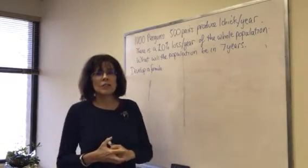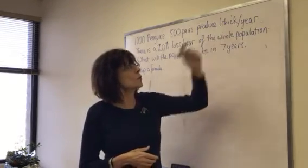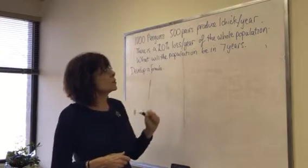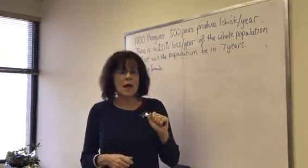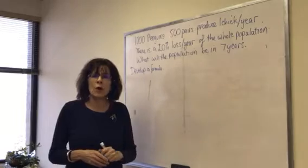We have a thousand penguins, 500 pairs that produce one chick per year, per pair. There's a 20% loss per year of the whole population. What will the population be in seven years? And the student is supposed to develop a formula.